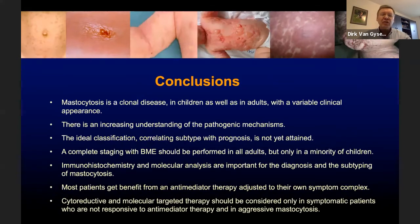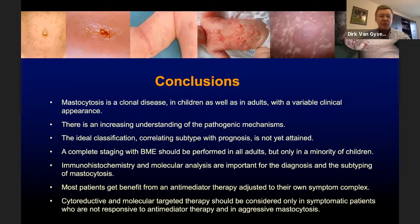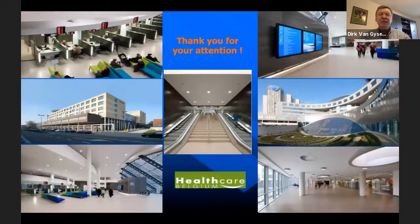In conclusion, mastocytosis is a clonal disease in children and adults with variable clinical appearance. There is increasing understanding of pathogenic mechanisms, but the ideal classification correlating subtype with prognosis is not yet attained. Complete staging with bone marrow examination should be performed in all adults, but only in a minority of children. Immunohistochemistry and molecular analysis have become very important in diagnosis and subtyping. Most patients can benefit from anti-mediator therapy adjusted to their symptom complex; cytoreductive and molecular targeted therapy should be considered only in symptomatic patients unresponsive to anti-mediator therapy and in aggressive mastocytosis.